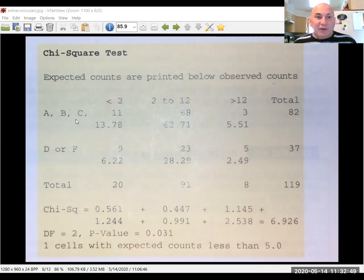There are two degrees of freedom because it's rows minus one times columns minus one. Two minus one is one, times three minus one is two. One times two is two. There's no reason to look up a critical value because Minitab tells us the p-value is 3.1%. So if alpha was 5%, we would reject the null and say that there is a relationship between grades and extracurriculars.